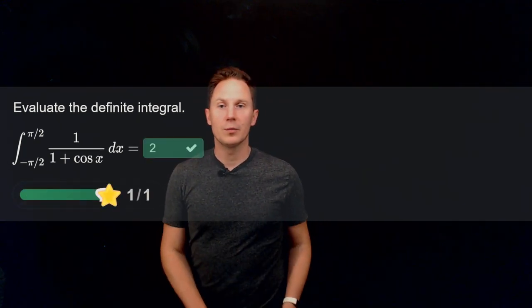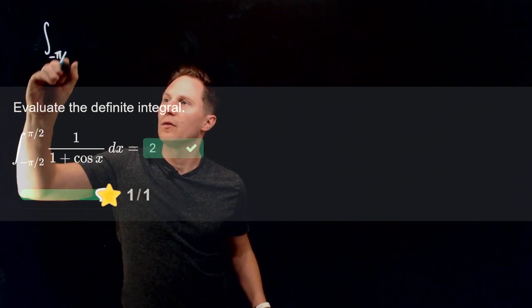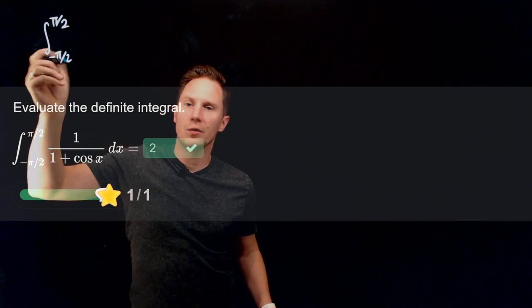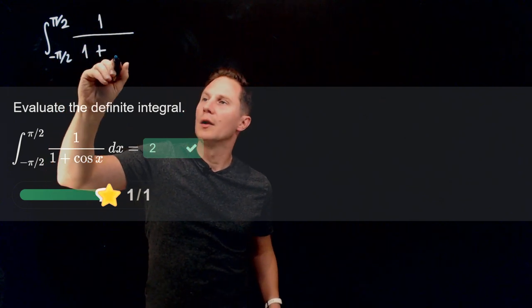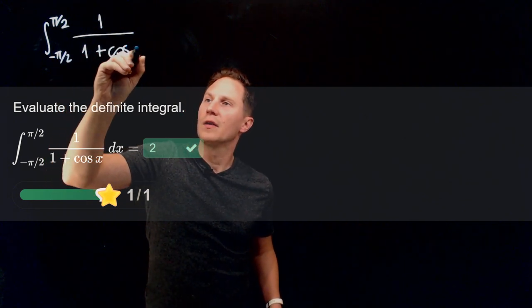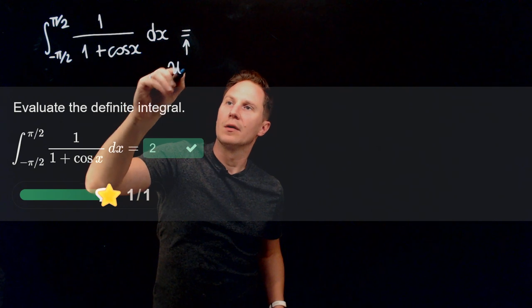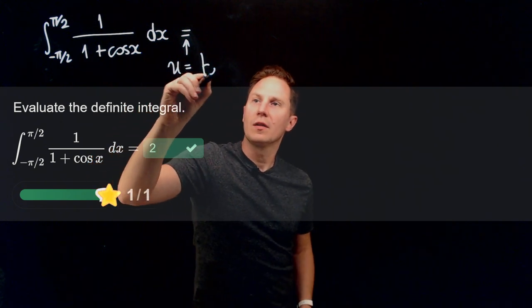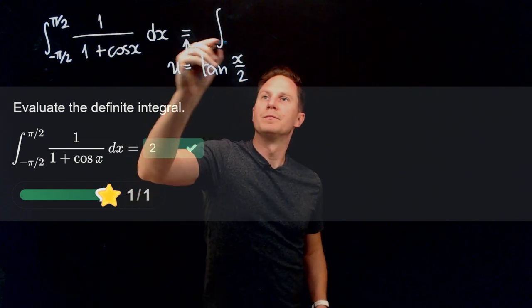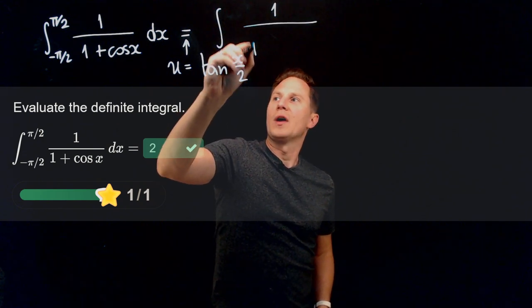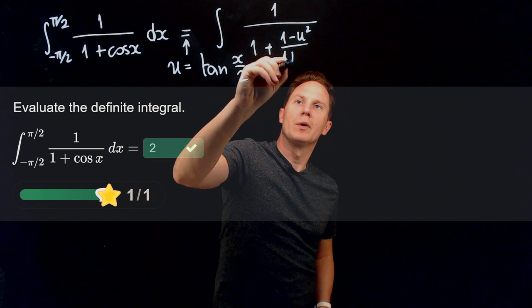I hope you paused it and found the value to be 2. We can use this tangent half-angle substitution by substituting u = tan(x/2). As mentioned on the slides, this means cos x becomes (1 - u²)/(1 + u²),